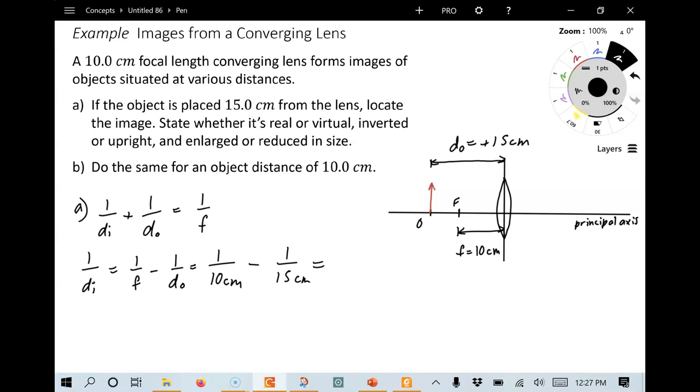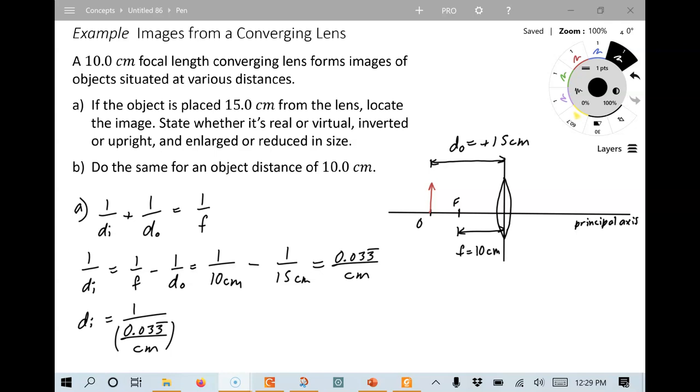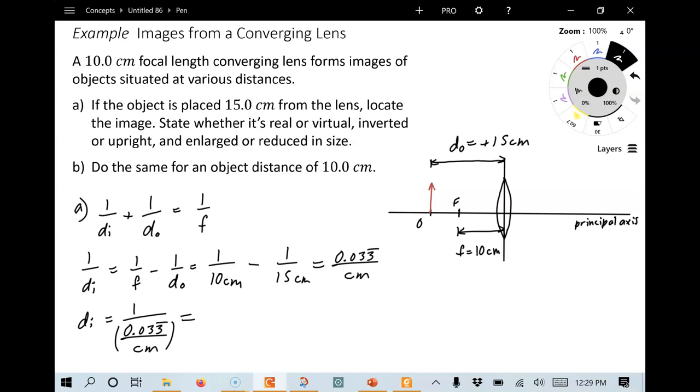So that's going to be 1 divided by 10 centimeters minus 1 divided by 15 centimeters. That gives us a value of 0.033 repeating over centimeters. Now, of course, we are looking for di. We need to take the reciprocal of that. So 1 divided by this number. That comes out to plus 30 centimeters.